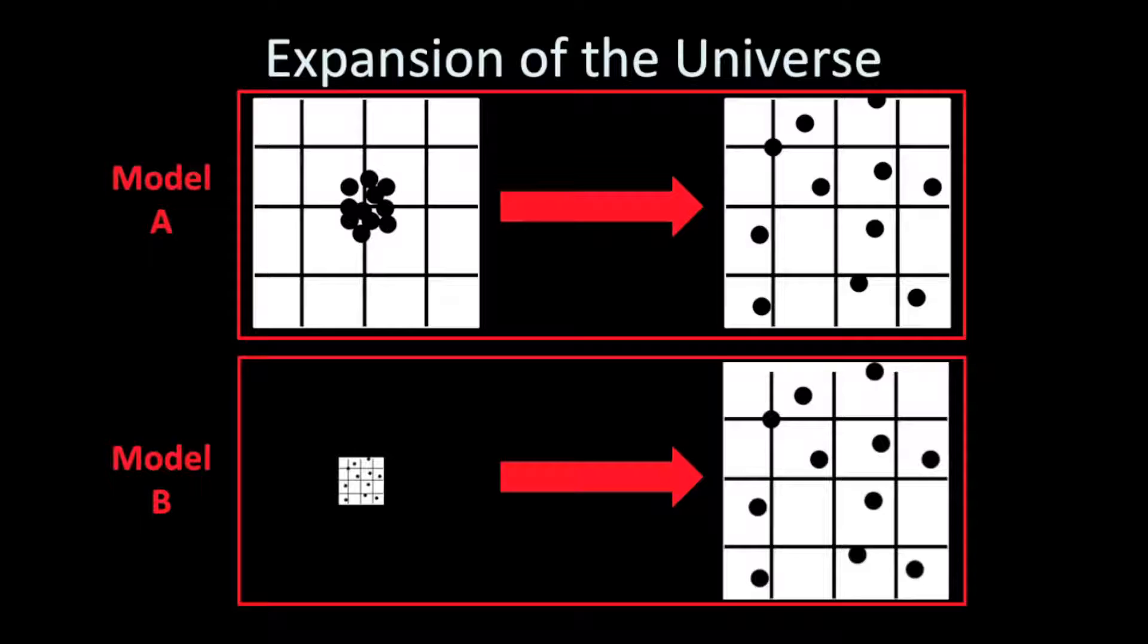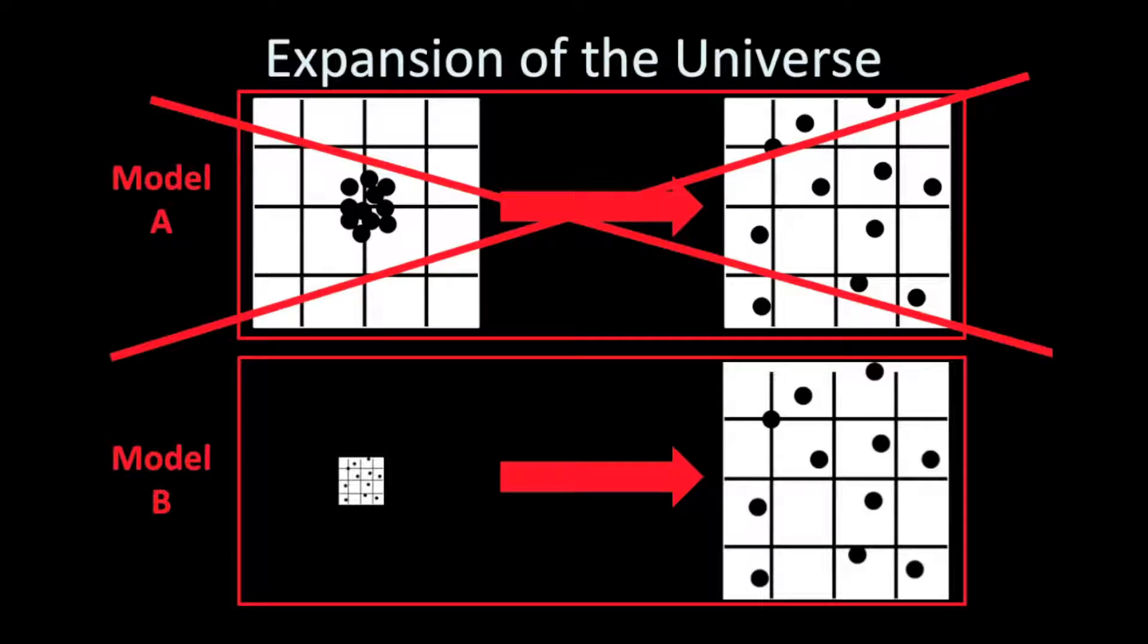Which model A or B shows a universe that more closely resembles our actual universe? If you said Model B, you'd be right. Model B is the one that represents more closely our actual universe. Model A is a commonly held misconception among people who think about expansion. They think that galaxies are just expanding away through pre-existing space. But what's actually happening is the expansion of the universe creates new space and time as it expands, and galaxies are just along for the ride.